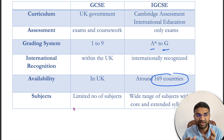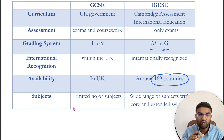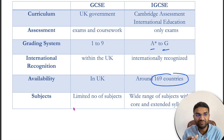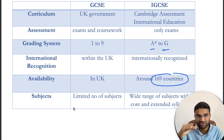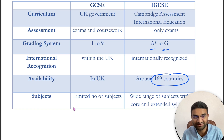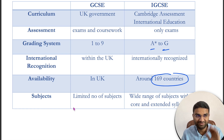iGCSE has core and extended syllabus options for each and every subject. For example, if you choose Math Core it's a basic version of maths, but if you take the extended version of Math it's a slightly higher level with tougher questions as well. That's it — if you like this video, share it with your friends. Thank you, bye-bye!